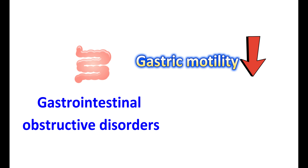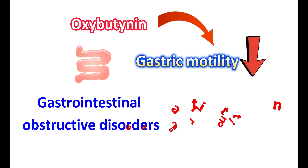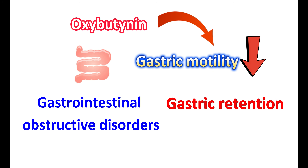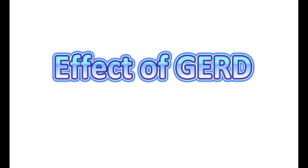If you have reduced gastric motility or any gastrointestinal obstructive disorders, this medication should be used carefully. Oxybutynin is an anticholinergic agent, and due to its blocking action on the cholinergic system, it can reduce gastric motility and increase gastric retention. In people with decreased intestinal motility or obstructive disorders, this gastric retention is more pronounced, and the dose may need to be reduced or withdrawn under severe conditions.